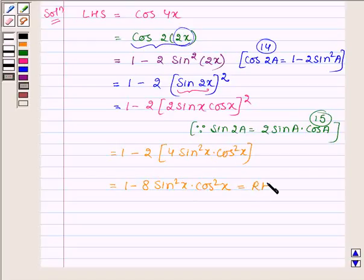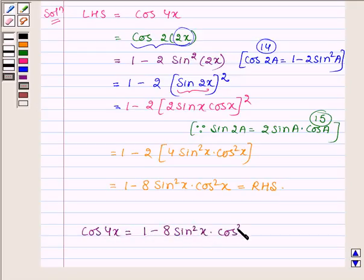And this is the right hand side of the given problem. Hence we have cos 4x is equal to 1 minus 8 sin square x into cos square x.